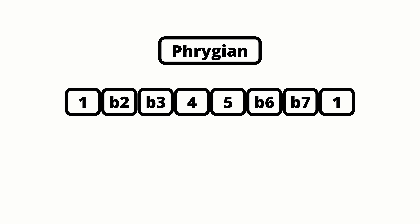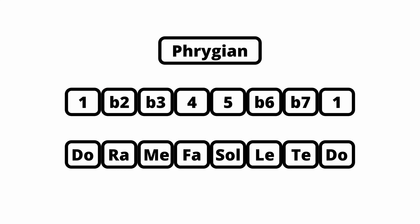Our final reference mode is the Phrygian mode. I personally find the Phrygian mode very easy to distinguish because it has this sort of dark and mysterious quality to it and is used very often in metal music. The formula for the Phrygian mode is 1, b2, b3, 4, 5, b6, b7, 1. That minor second is what gives the Phrygian mode its dark flavor.